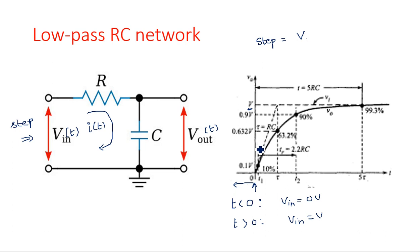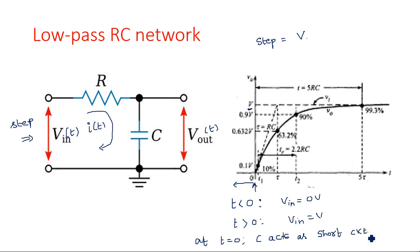Remember, the capacitor does not allow sudden changes in voltage. So at t = 0, it simply acts as a short circuit. Therefore, at t = 0, the output V_out is equal to 0, because we are taking the output across the short circuit. Even though the input changes suddenly from 0 to V volts, the output remains at 0 volts.